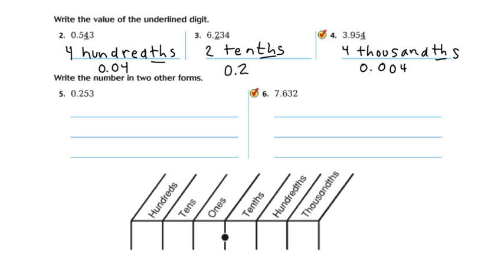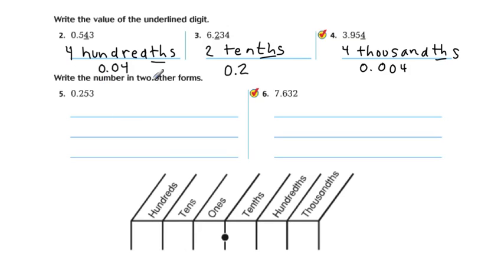Okay, our next task is to write this number in two other forms. We see it's already in standard form, so the two other forms are word form and expanded form. Let's take on the word form. In word form, you're just naming that number.